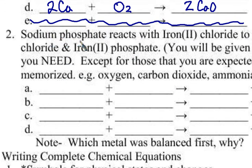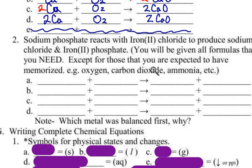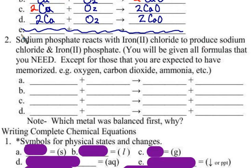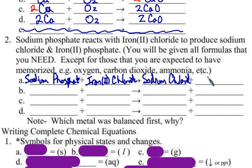Next, we have sodium phosphate reacts with iron(II) chloride to produce sodium chloride and iron(II) phosphate. The word equation is: sodium phosphate and iron(II) chloride produce sodium chloride and iron(II) phosphate.